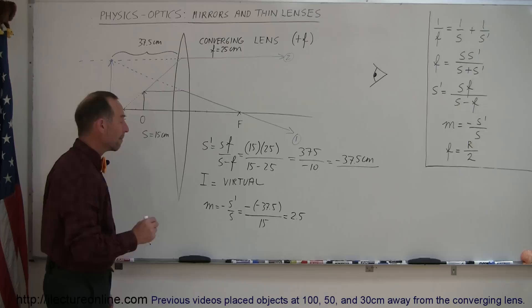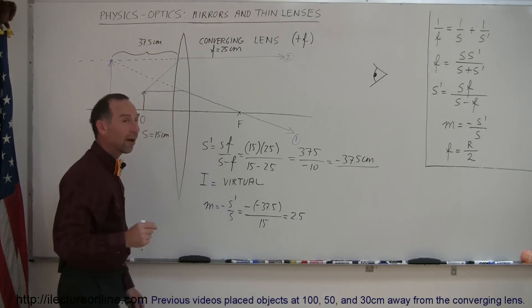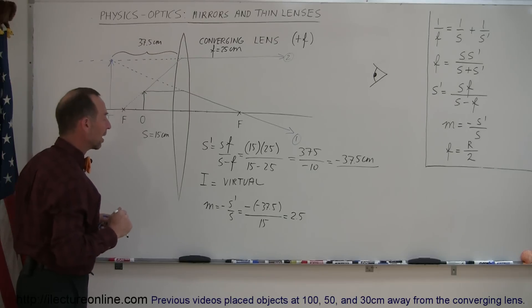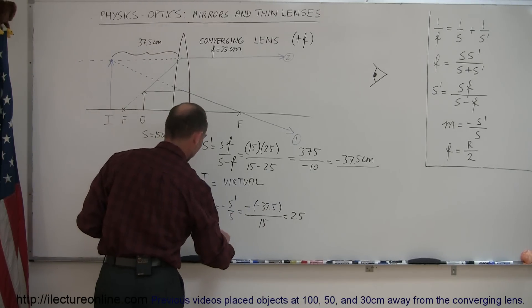So what that means is that the magnification, the size of the image, is 2.5 times the size of the object. So the image is much larger than the object. And since it's positive, we say that the image is upright.